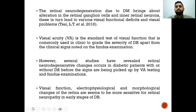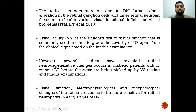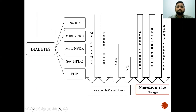The retinal neurodegeneration due to diabetes brings about alteration in retinal ganglion cells and inner retinal neurons, leading to various functional deficits and visual problems. Visual acuity is a standard test commonly used to grade the severity of diabetic retinopathy. However, several studies have revealed that retinal neurodegeneration changes occur in diabetic patients with or without diabetic retinopathy before signs are picked up by visual acuity testing and fundus examination. Therefore, visual function, electrophysiological, and morphological changes of the retina seem to be more sensitive for retinal neuropathy in early stages of DR.